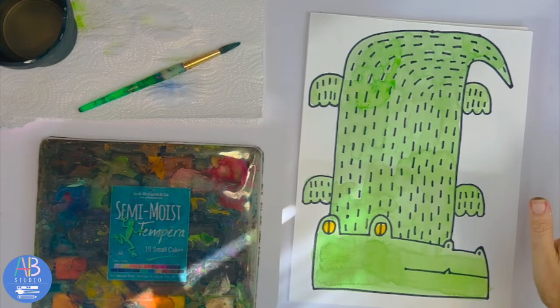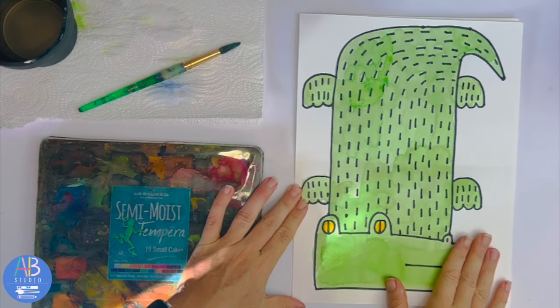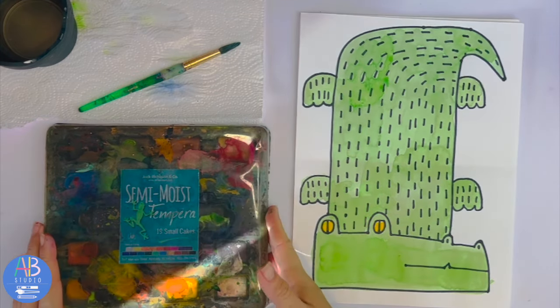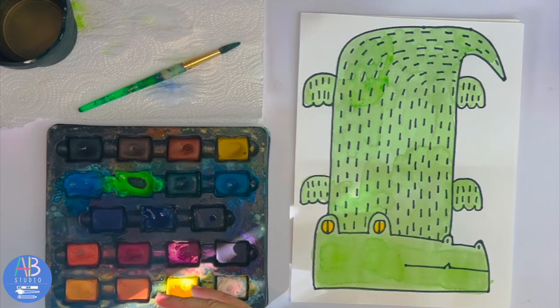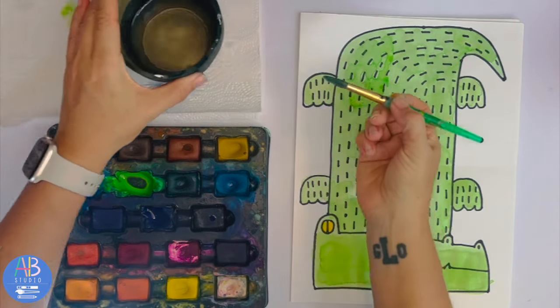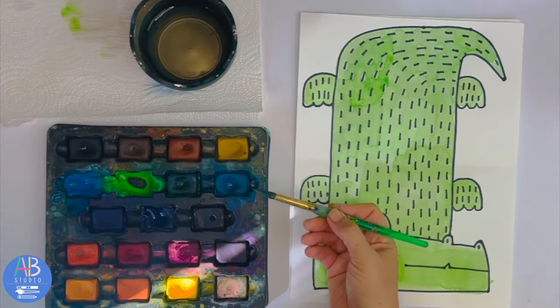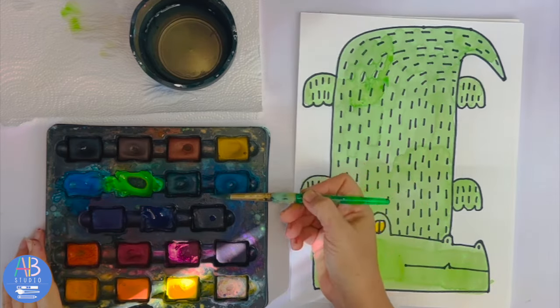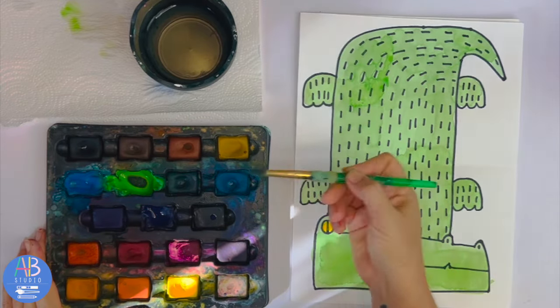Okay, moving on to the second part of our alligator. Again, my alligator is dry. I've got my separate semi-moist tempera paints ready. I've got my water and my round brush. Remember these have to be activated, so you'll be doing: paint - I mean water, rub the paint, to the paper. Water, rub the paint, to the paper.